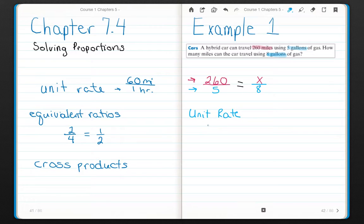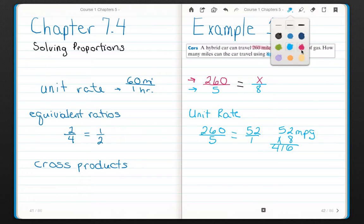Okay, here's option one. So the unit rate, 260 divided by five, is equal to 52 over one. So that tells me I can get 52 miles per gallon, or MPG. But I want to know how far I can go on eight gallons. So 52 times eight equals 416. So X is 416 miles in eight gallons.